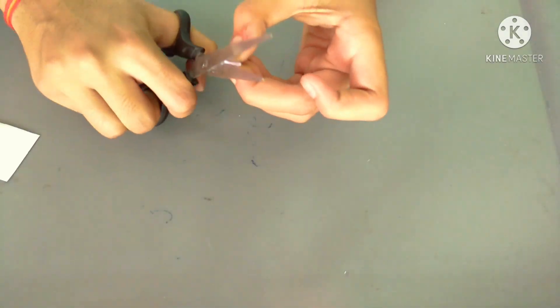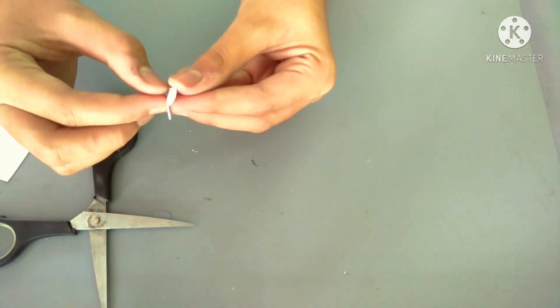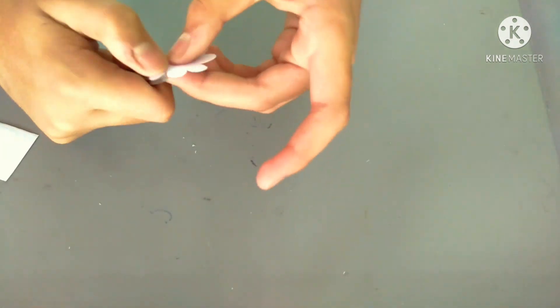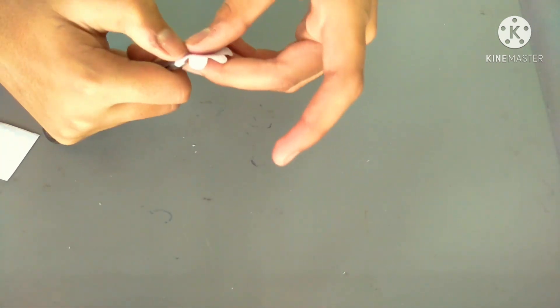Cut it. Now your flower is ready. Look at the flower. Take the scissor and curve the leaves of the flower like I am doing.